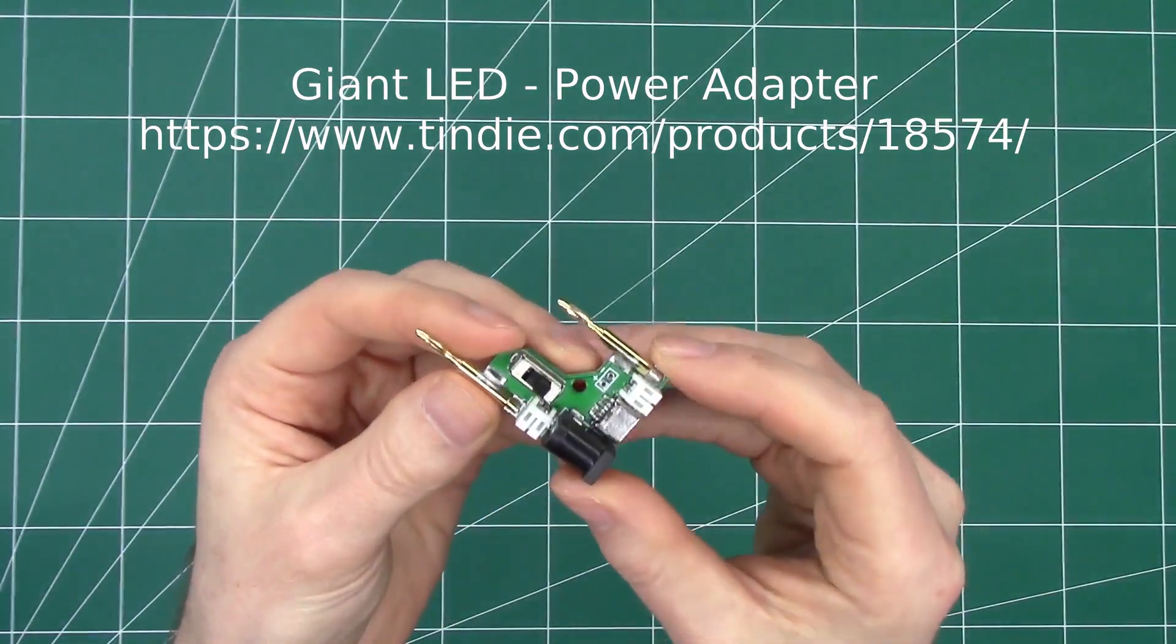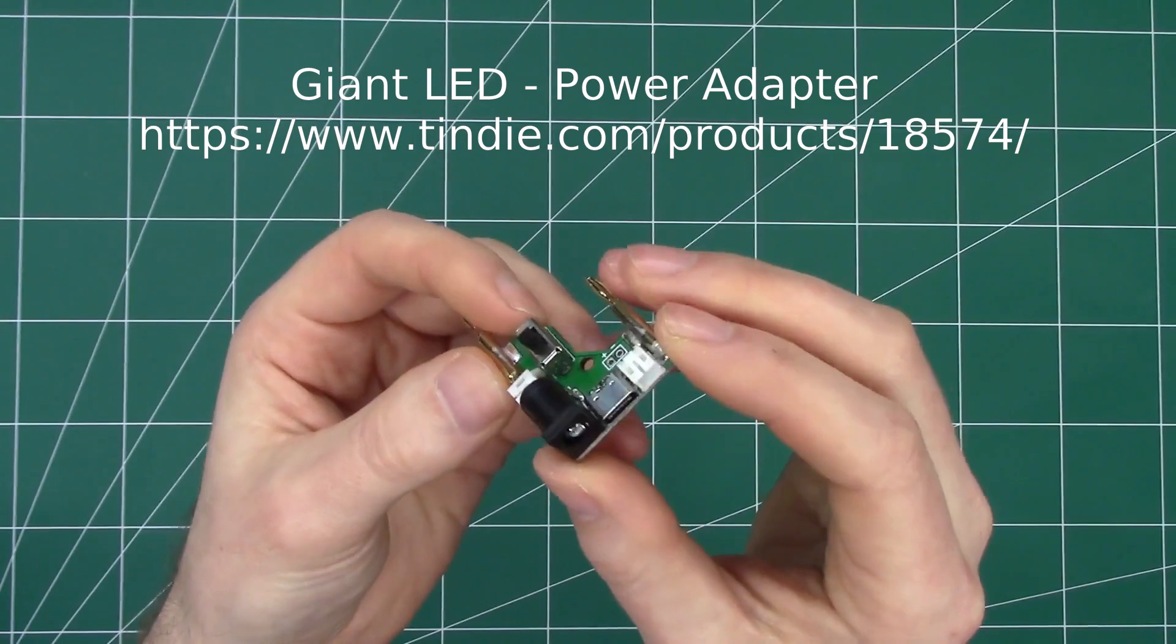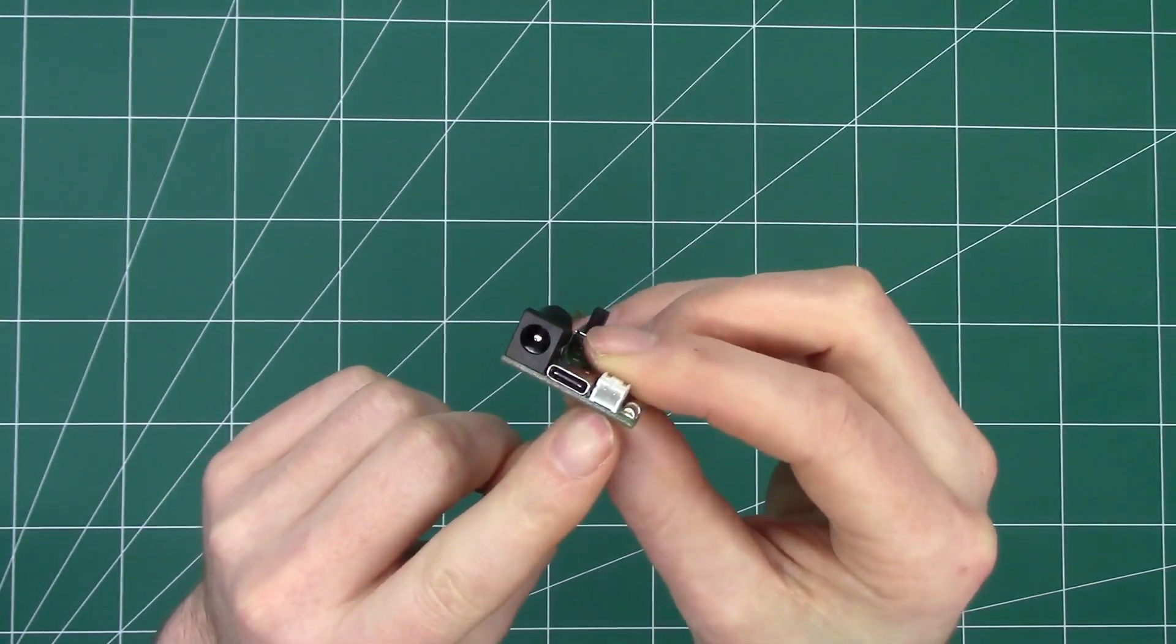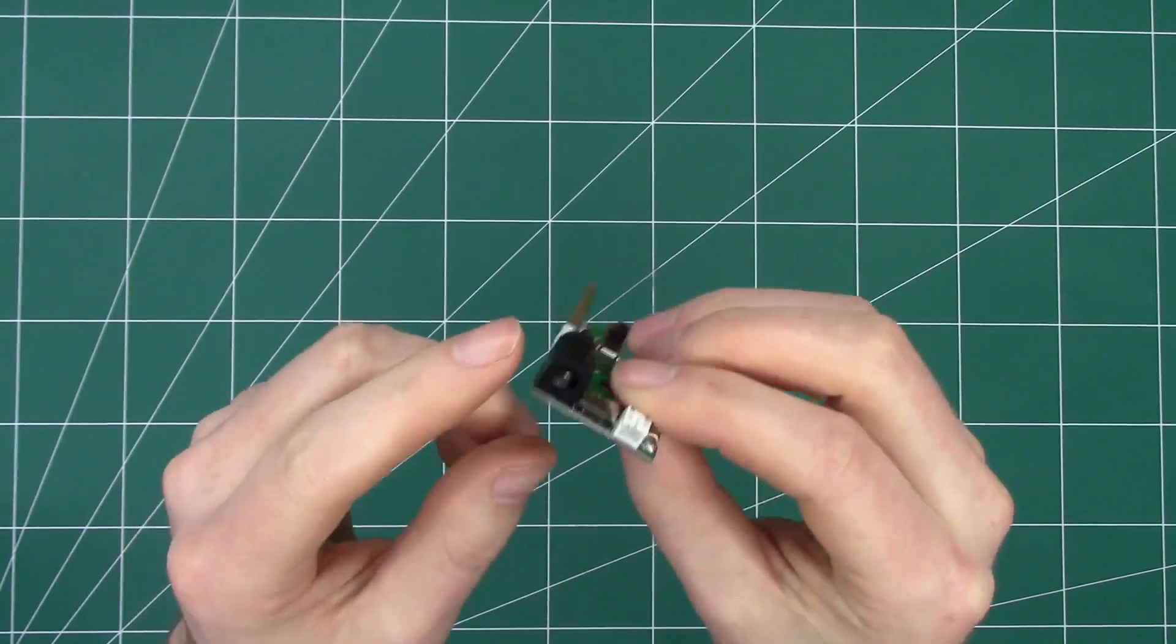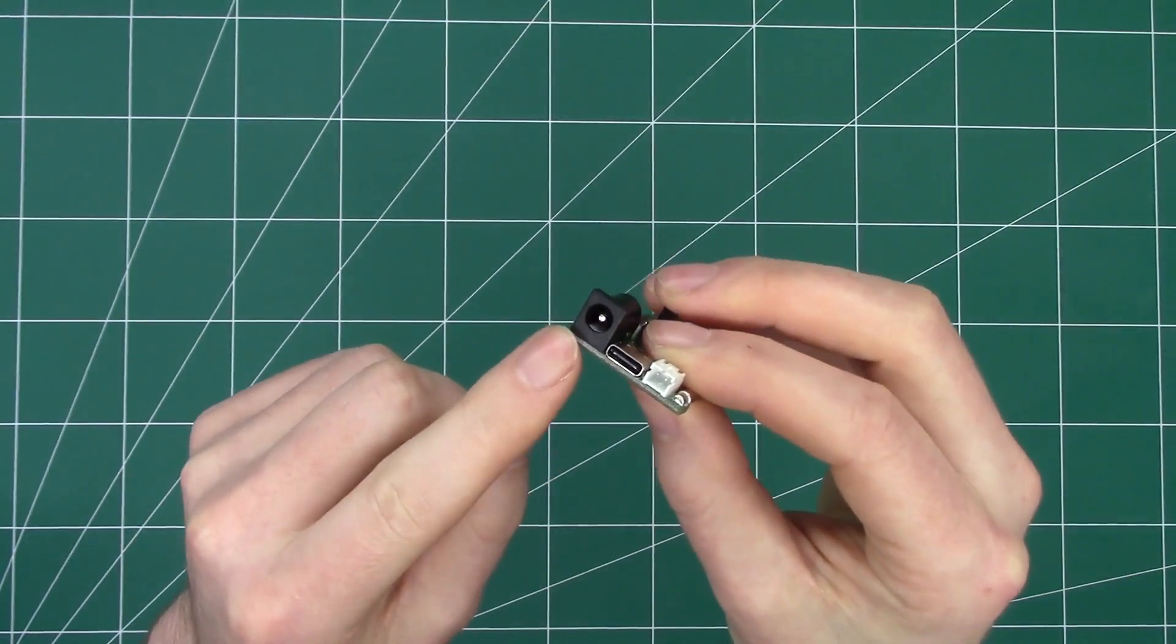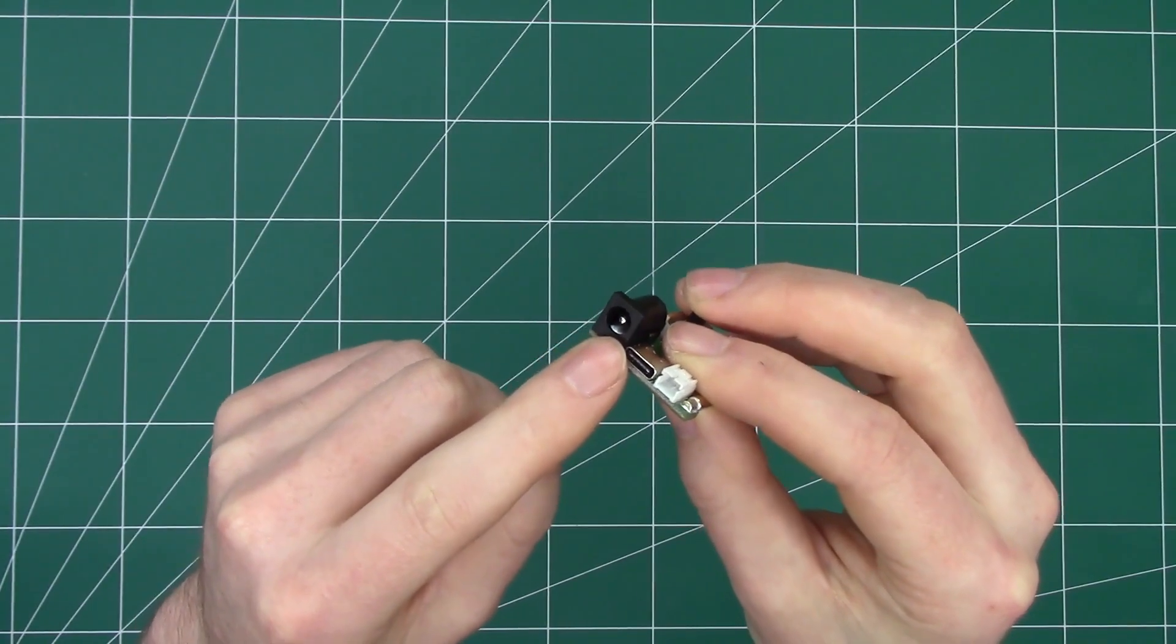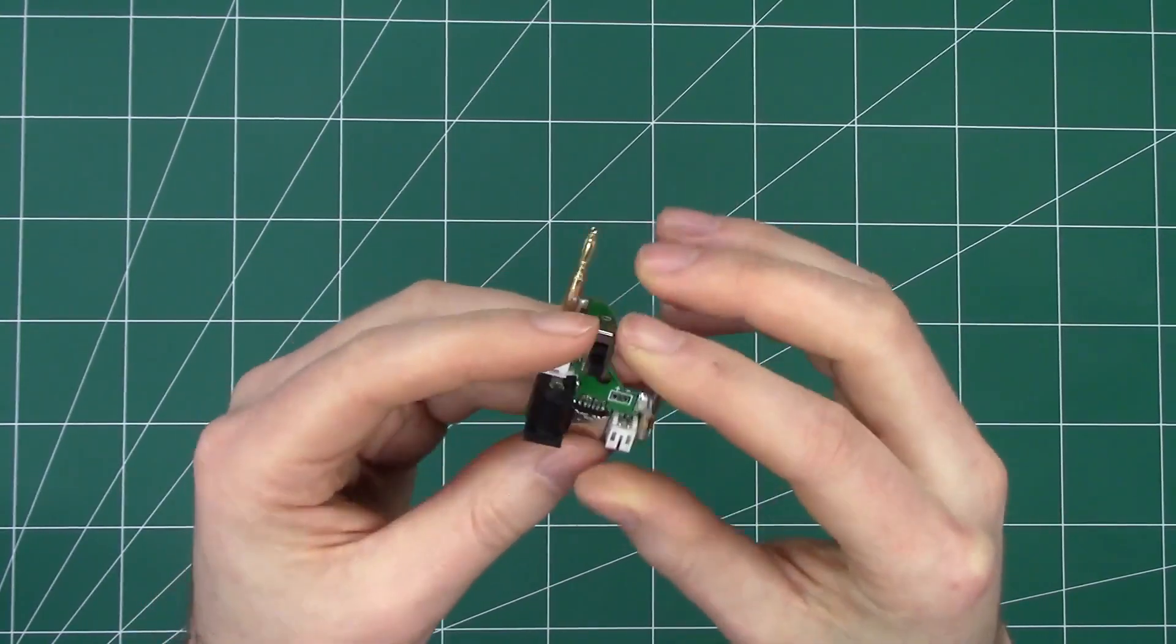I've also created an add-on printed circuit board which has USB-C, JST battery connectors—there's two of those—and also a DC barrel jack. That's a 5.5 millimeter with a 2.1 millimeter center pin.